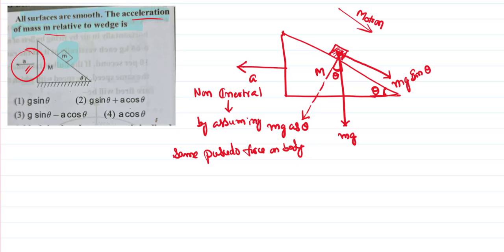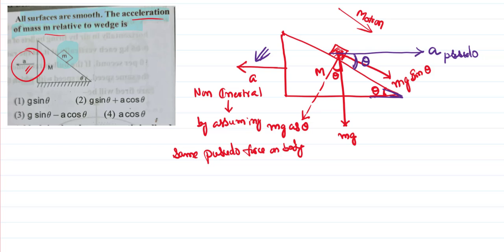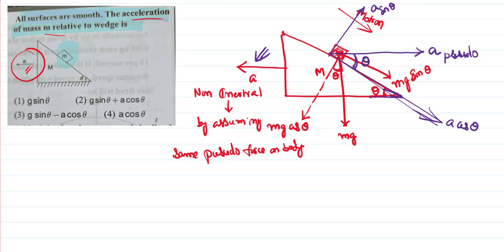To eliminate the impact of this non-inertial frame on the block, I shall imagine a pseudo force and a pseudo acceleration. Since this angle is theta, this angle is also equal to theta, so the pseudo acceleration can also be resolved into components. One component acting adjacent to theta is a·cosθ, and the perpendicular component is a·sinθ. Neither Mg cosθ nor a·sinθ are going to move the body, since they act perpendicular to the inclined plane.